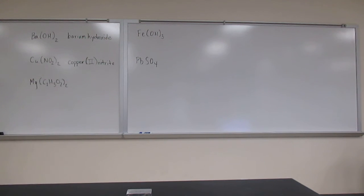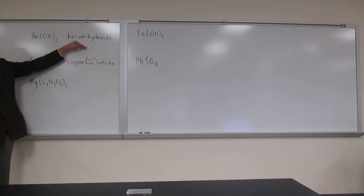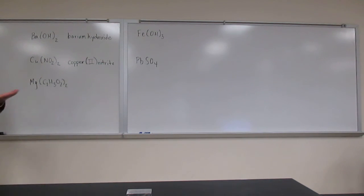So this is going to be called copper two nitrite. Remember the two is because it's a transition metal. So what can we say about barium? Barium's not a transition metal. Look at where it is relative to each other on the periodic table, and that'll remind you.